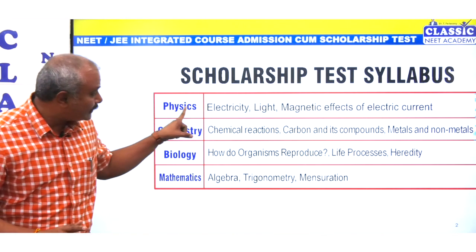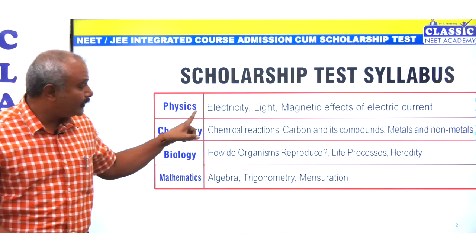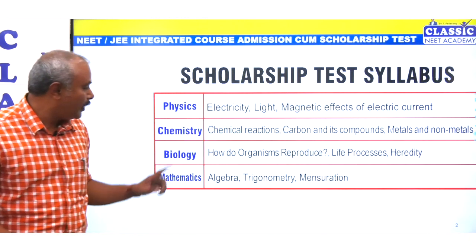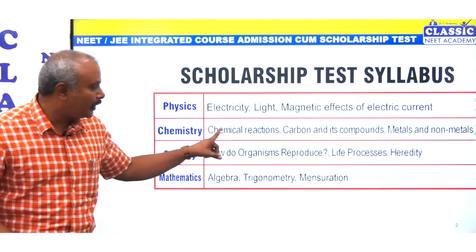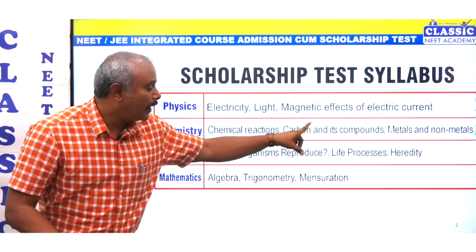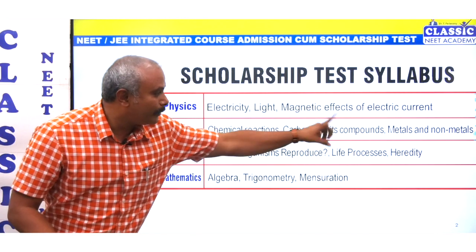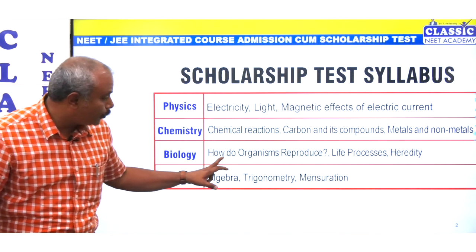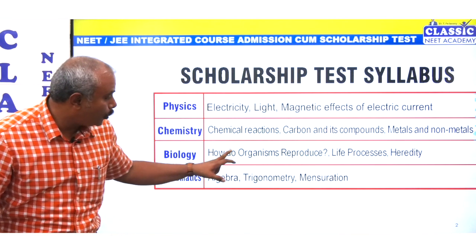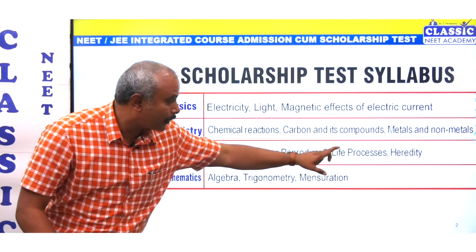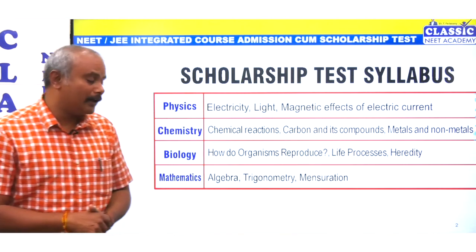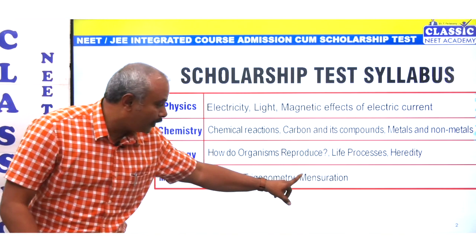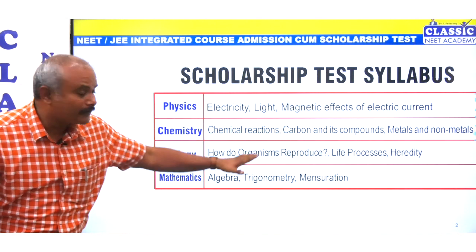Here is the detailed syllabus. Physics: Electricity, Light, and Magnetic Effects of Current. Chemistry: Chemical Reactions, Carbon and its Compounds, Metals and Non-metals. Biology: How do Organisms Reproduce, Life Processes, and Heredity. Mathematics: Algebra, Trigonometry, and Mensuration. This is the complete syllabus — the test will assess your basics in these topics.